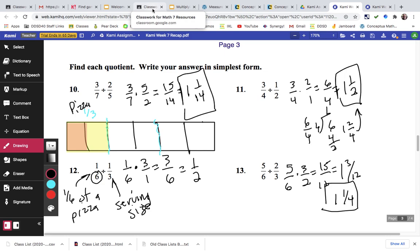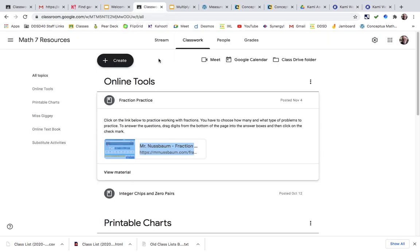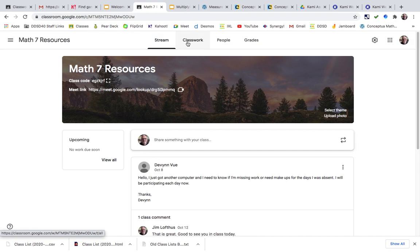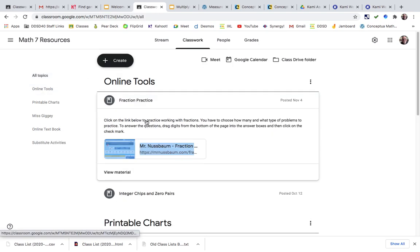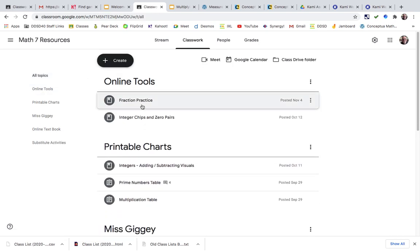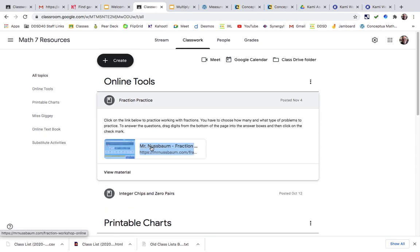What I'm going to do is just do an answer key for Kami week 7. I did add this to the online tools, so if you go to Math 7 resources and you go to online tools, there is a site called Fraction Practice.